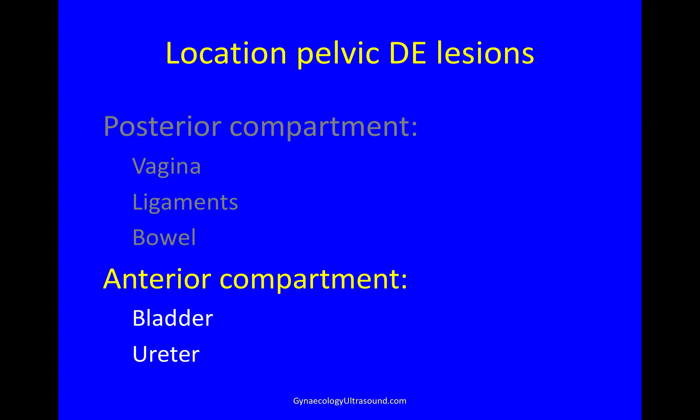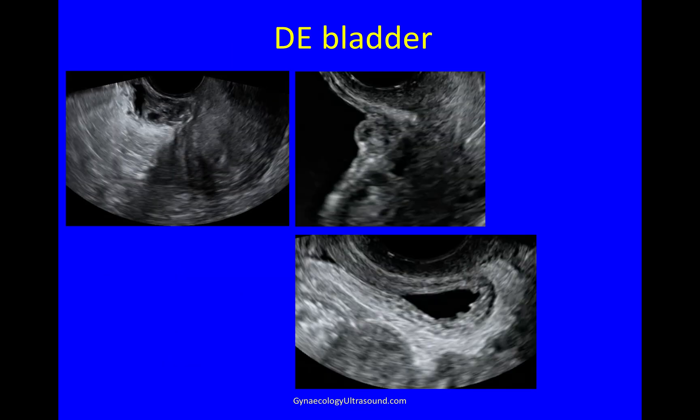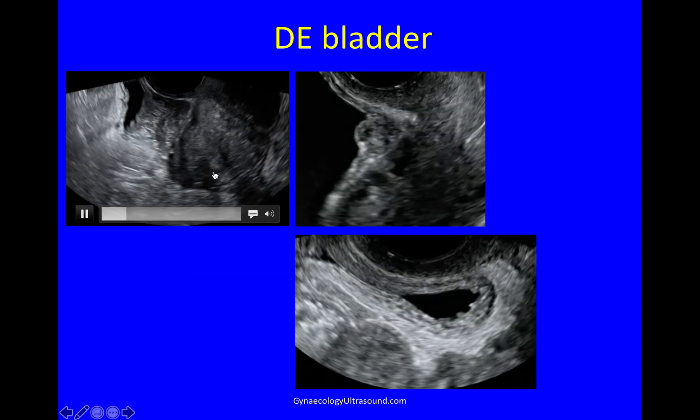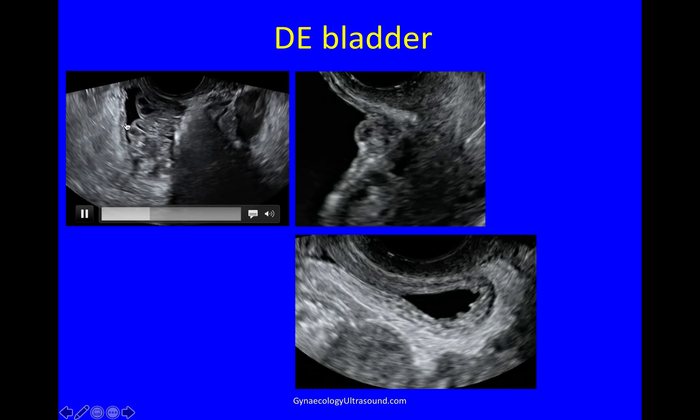At the end of the scan, don't forget the anterior compartment, looking at the bladder. And in this case, this is a very large bladder nodule of deep endometriosis.